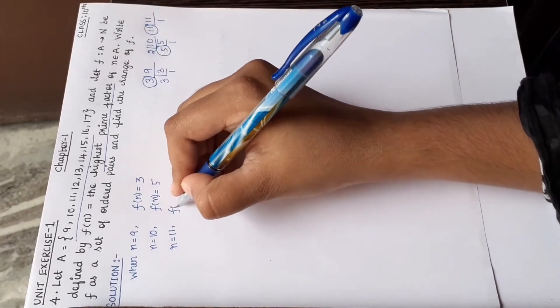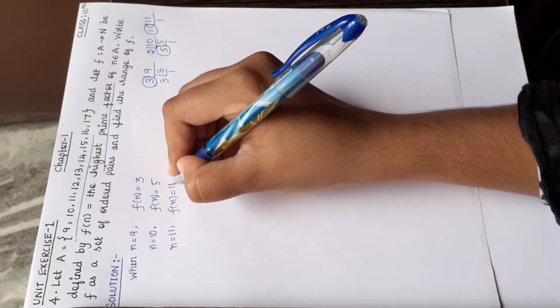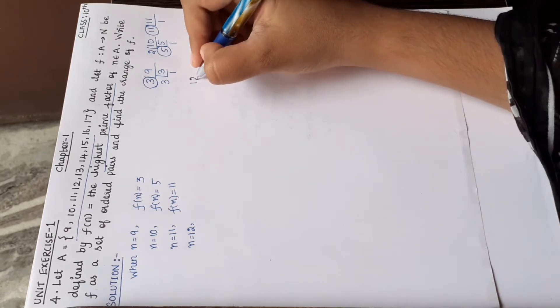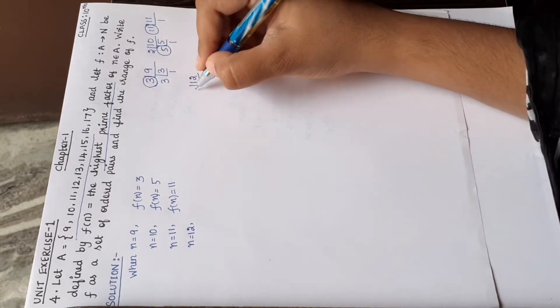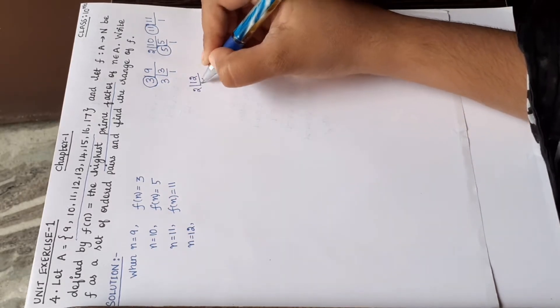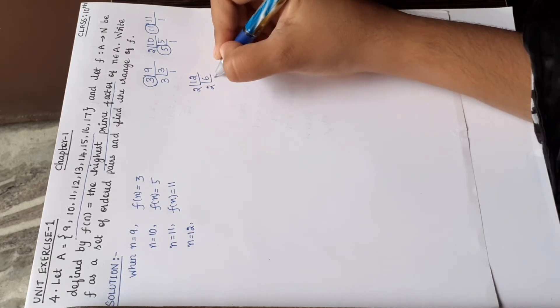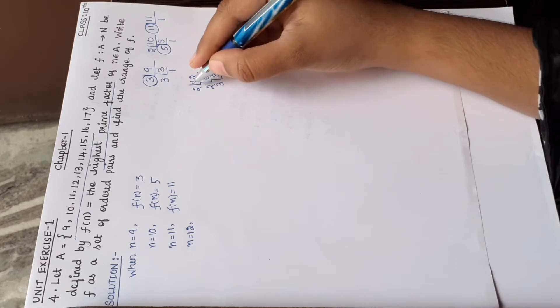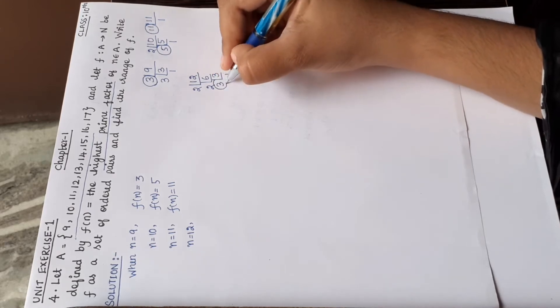F of n is equal to 11. Next, n is equal to 12. Suppose n is 12, factorize the prime factors: 2 times 6 are 12, 2 times 3 are 6, 3 times 1 are 3. So this is the highest end: 2, 2, and 3. So 3 is the highest.